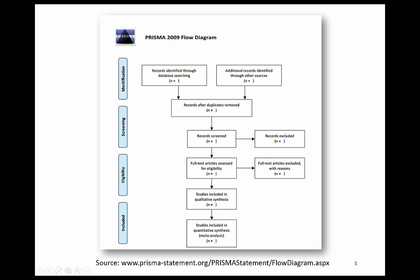Good systematic reviews are usually reported using a standard set of guidelines known as PRISMA, which stands for Preferred Reporting Items for Systematic Reviews and Meta-analyses. You may already be familiar with the so-called PRISMA diagram, a flowchart demonstrating the various stages which were involved in locating and selecting articles for the systematic review, along with the numbers of articles located at each stage. As narrative reviews do not follow a strict methodology or reporting guidelines, they will not normally contain a PRISMA diagram.